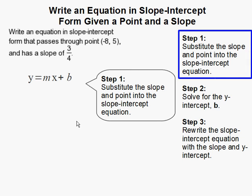Step 1. Substitute the slope and point into the slope-intercept equation. We are given everything except for b and with the information given we can solve for b.